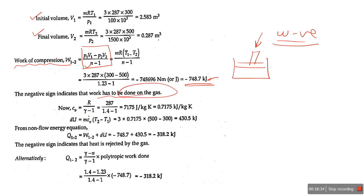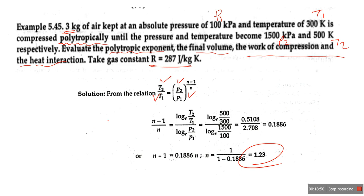CV equals R upon (gamma minus 1). They have provided CV to solve the change in internal energy using ΔU = mCV × ΔT. The polytropic index N = 1.23. For the gamma value, we use 1.4 — note there was a printing mistake in the material.